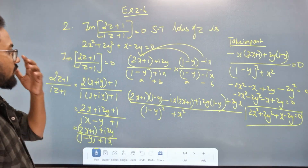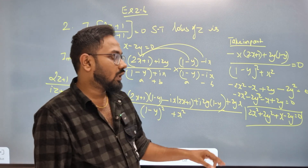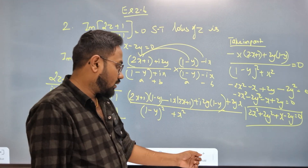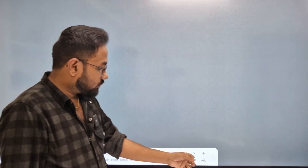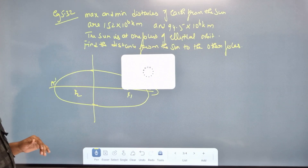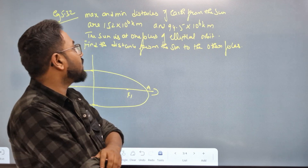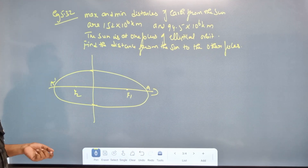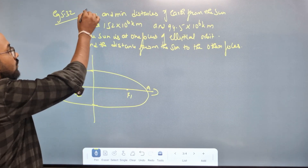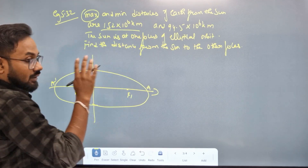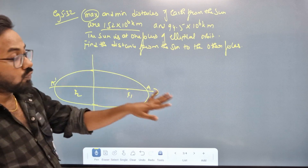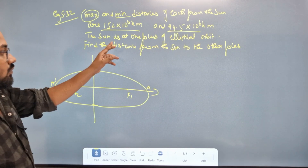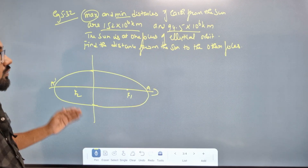So it is simple — this is the imaginary part, it is a simple and easy mark. Now, if you look at question 5.5, it is very easy. Maximum and minimum distance of the Earth from the Sun. The Sun is at one focus of the elliptical orbit.